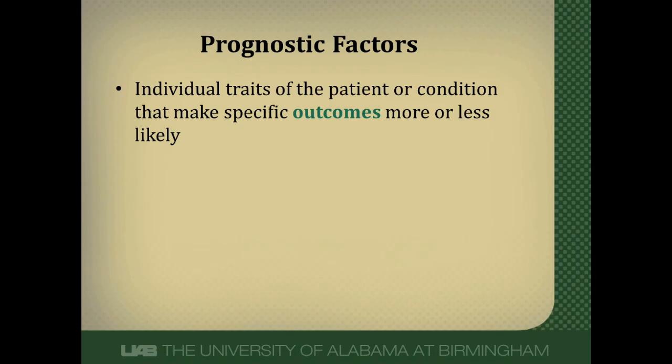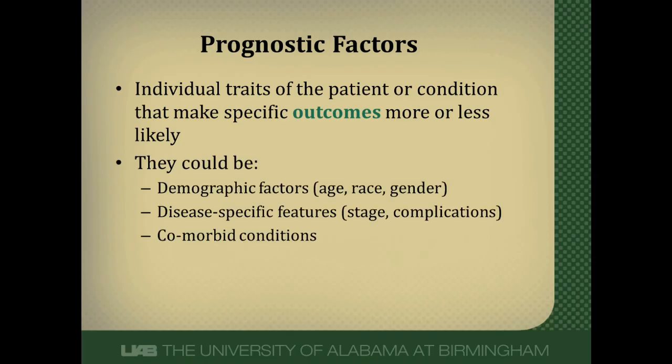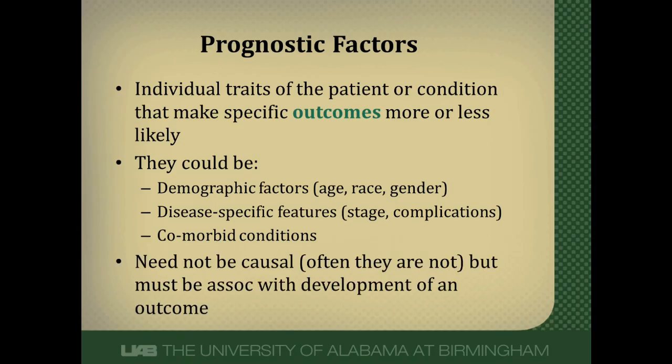Prognostic factors are individual traits of the patient or the condition itself that makes specific outcomes of that disease more or less likely to occur. They could be a variety of things — demographic factors like age, race, gender; disease-specific features like stage of the disease or various complications that develop from the disease; or comorbid conditions that the patient has. Prognostic factors do not have to be causal of the outcome, and often they're not, but they do have to be associated with development of the outcome.